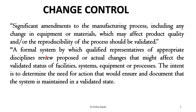A formal system means a properly documented procedure by which the qualified representatives — generally the quality assurance team consisting of experts from various areas — come together and review the proposed or implemented change, trying to understand how it will affect the already approved process, product, or the validated status of the process, product, facilities, systems, and equipment. The intention is to determine the need for any action to ensure and document that the system remains in a validated state and that the safety and efficacy of the product has not been compromised.